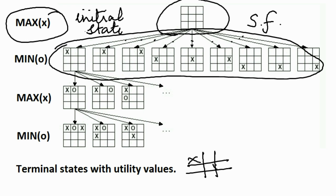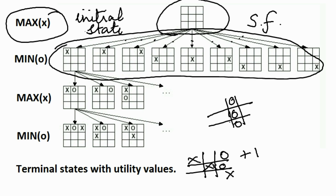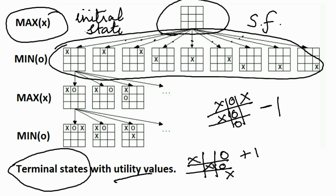Now let us look at the terminal states — states where the game has ended. This particular terminal state has a utility value of plus one because Max is winning in this state. Consider another state where Min is winning; this will have a negative utility value. So positive and higher utility values are good for Max, and lower or negative utility values are bad for Max. Plus one is good and minus one is bad.